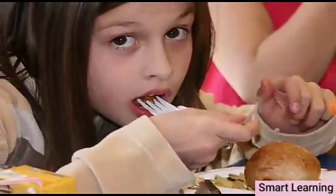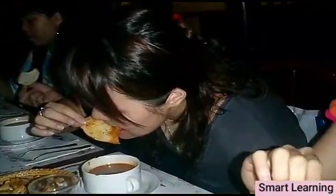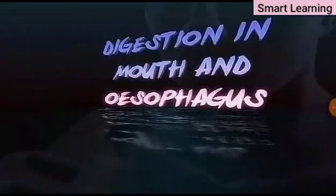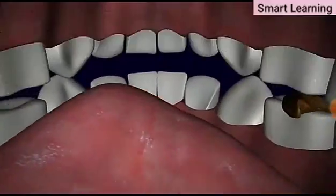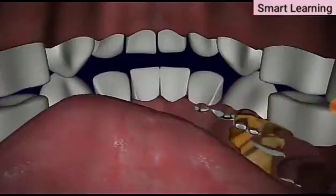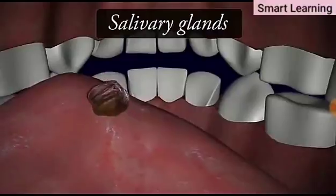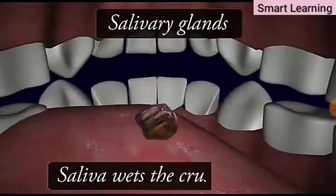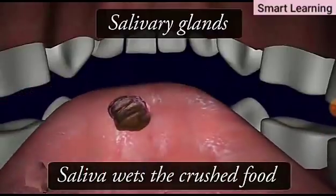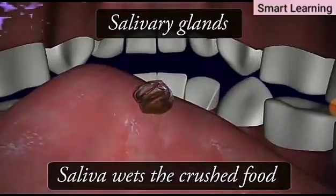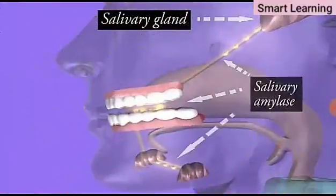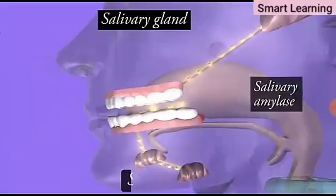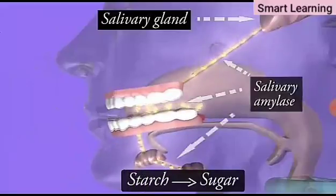We eat various types of food which pass through the same digestive tract. The food is first crushed in our mouth with our teeth. In the buccal cavity, a fluid secreted from the salivary glands called saliva wets the crushed food. Saliva also contains an enzyme called salivary amylase that breaks down starch and glycogen into maltose.